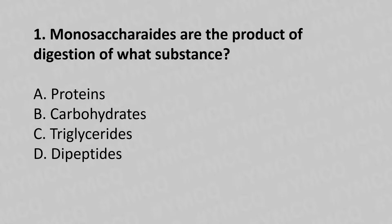Monosaccharides are the product of digestion of what substance? Option A: Protein. Option B: Carbohydrate. Option C: Triglyceride. Option D: Dipeptides. And the answer is Option B: Carbohydrate.